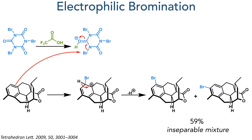Finally, the researchers turned their attention towards cephanolide D and cephanolide B. Taking the same lactone intermediate used for cephanolide C, they subjected it to an electrophilic bromination using tribromocyanuric acid. This is first protonated by TFA, making it more electrophilic, and it then undergoes electrophilic aromatic substitution with the phenyl ring. This reaction was not regioselective and formed the product in a 59% yield as an inseparable mixture.